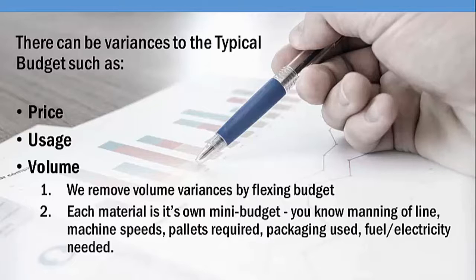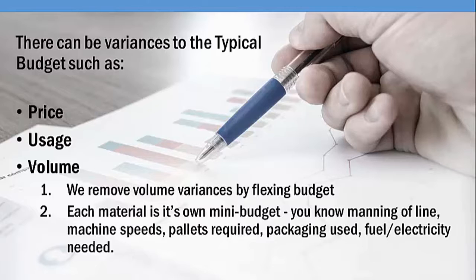Last period, we were budgeted to make 10 cakes. However, we spent 11 hours of labor at $11 an hour, 11 pounds of butter, 11 pounds of sugar, 11 pounds of flour, resulting in a price variance of $121 and a usage variance of $100. We used 33 pounds of raw materials instead of 30. Well, I guess it was a bad month at the bakery.